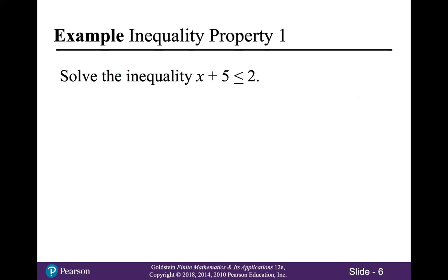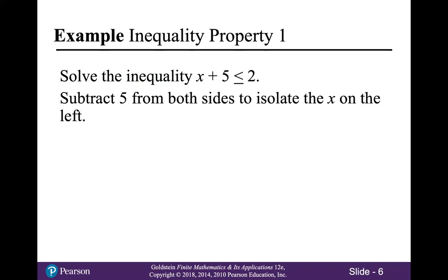For an easy first example, let's solve the inequality x plus 5 is less than or equal to 2. We will just subtract 5 from both sides of the inequality, which gives us x is less than or equal to negative 3. So the set of numbers that make this inequality true are all numbers that are less than or equal to negative 3.